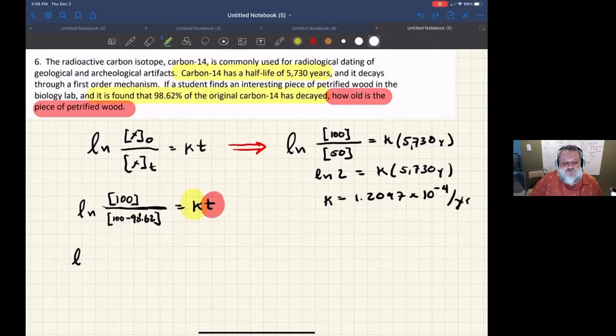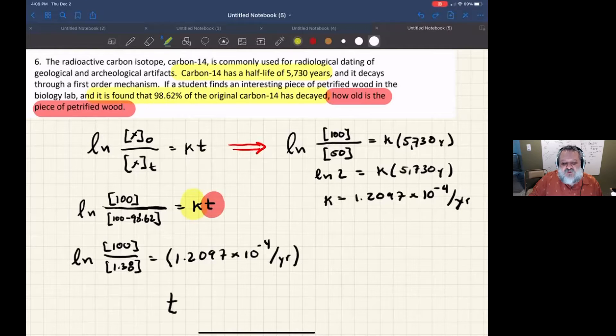Now I can put everything together. I have the natural log of 100 over 1.38 (that's 100 minus 98.62) equals k, which I just solved for: 1.2097 times 10 to the negative fourth per year, times t. Now I need to solve for t.